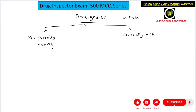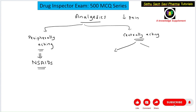There are two types of analgesics: centrally acting and peripherally acting. The analgesics which act peripherally — the main examples are the non-steroidal anti-inflammatory drugs, NSAIDs. NSAIDs are the peripherally acting analgesics, whereas centrally acting analgesics can be further divided into two categories.